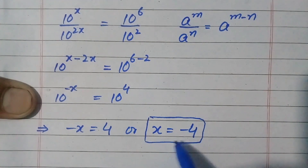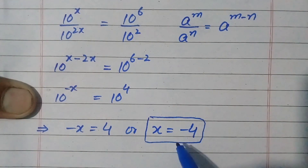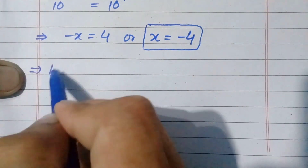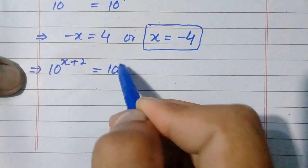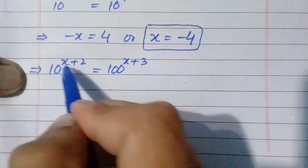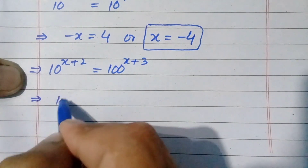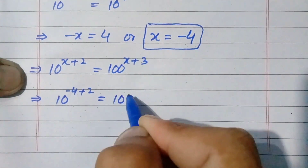Now we will verify that x equals minus 4 is the correct root of the above equation. We substitute this value into the original exponential equation, which was: 10 raised to power x plus 2 equals 100 raised to power x plus 3. Replacing x with minus 4 on both sides, it becomes: 10 raised to power minus 4 plus 2 equals 100 raised to power minus 4 plus 3.